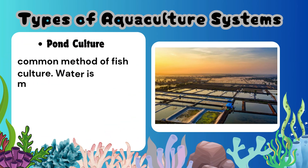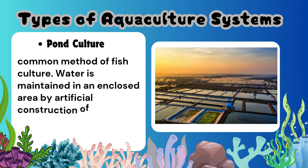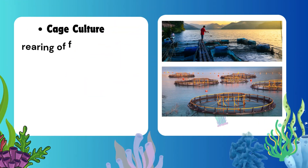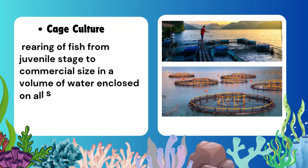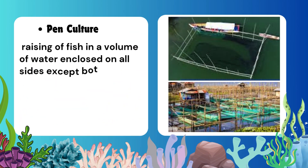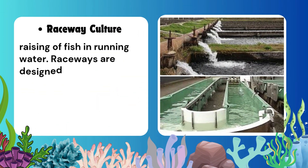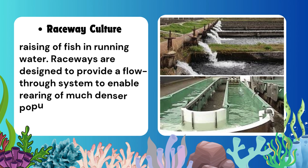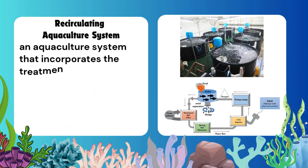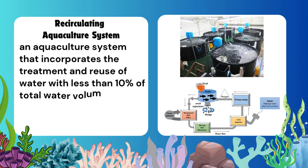Types of Aquaculture Systems: Pond culture is the common method of fish culture where water is maintained in an enclosed area by artificial construction of dike or bund. Cage culture involves rearing fish from juvenile stage to commercial size in a volume of water enclosed on all sides. Pen culture raises fish in a volume of water enclosed on all sides except the bottom — this system can be considered a hybrid between pond culture and cage culture. Raceway culture involves raising fish in running water; raceways are designed to provide a flow-through system to enable rearing of much denser populations of fish. Recirculating Aquaculture System is an aquaculture system that incorporates the treatment and reuse of water, with less than 10% of total water volume replaced per day.